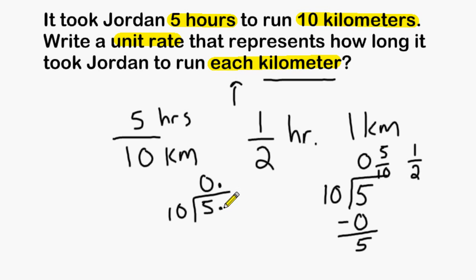And 10 can be divided into 50 five times. So we may also express our unit rate by saying that it took Jordan 0.5 hours to run one kilometer.